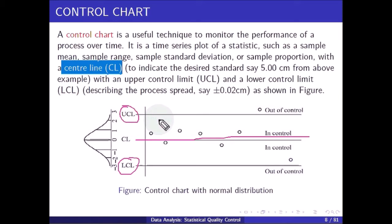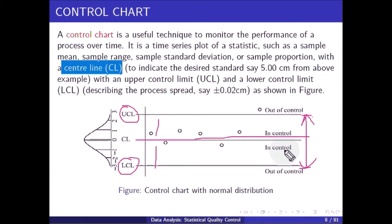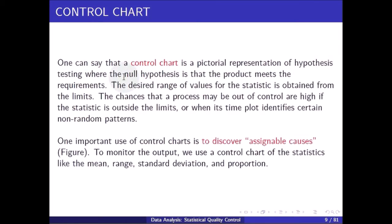The tolerance limit describes the acceptable range, for example ±0.02 cm around 5.00 cm. A control chart is a pictorial representation of hypothesis testing, where the null hypothesis is that the product meets the requirements. The desired range of values for the statistic is obtained from the limits. The chances that a process may be out of control are high if the statistic falls outside the limits or when its time plot identifies certain non-random patterns. An important use of control charts is to discover assignable causes.